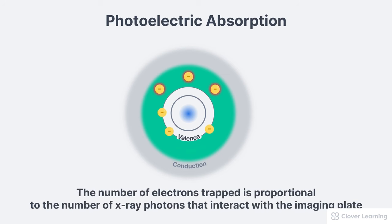The number of electrons trapped is proportional to the number of X-ray photons that interact with the imaging plate. The latent image remains stored within the individual phosphors until being released by a laser light within the plate reader.